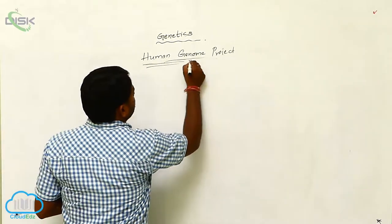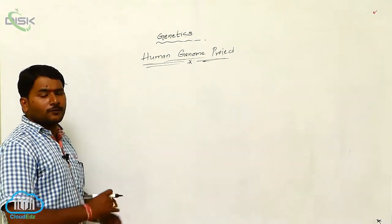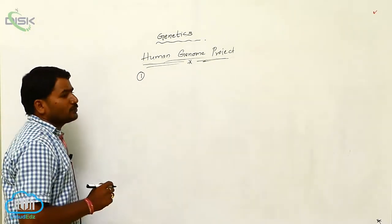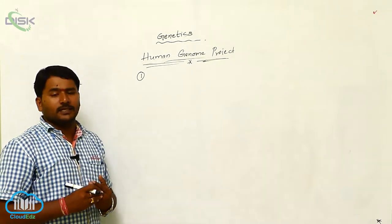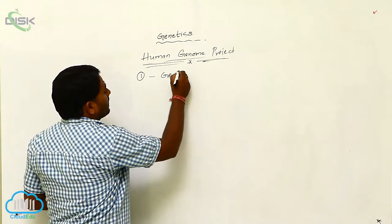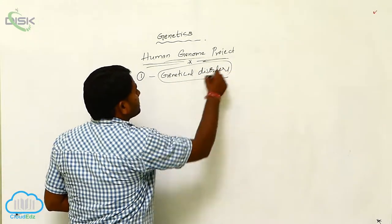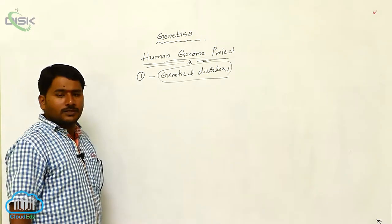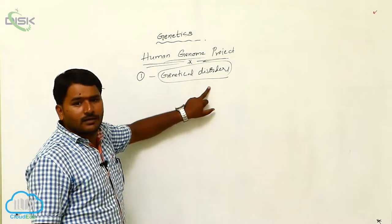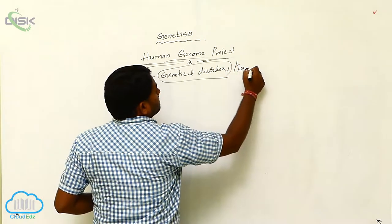Applications of Human Genome Project. In what way will the Human Genome Project be useful for human beings? Here, when we identify the genome of human beings, we can identify genetic disorders and what are the reasons for those genetic disorders. With the help of the Human Genome Project, we can identify genetic disorders and how we can treat them.